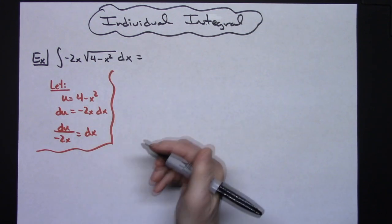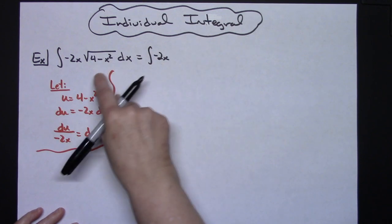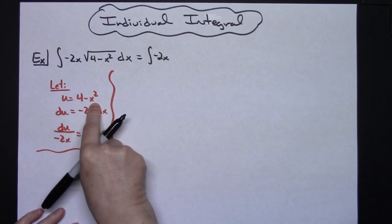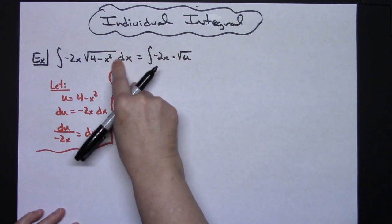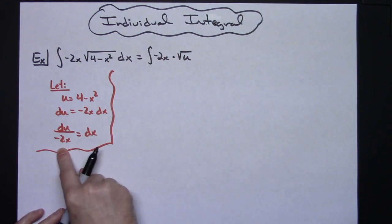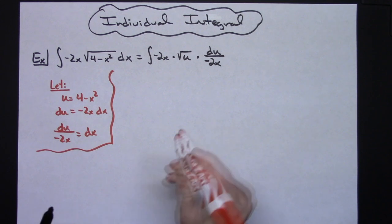Then I'm going to come back up here to my original integral and I'm going to start substituting things. I'll have the integral of the negative 2x stays, I let u be 4 minus x squared, so I will have times the square root of u. I can replace dx with what it equals and I have du over negative 2x.